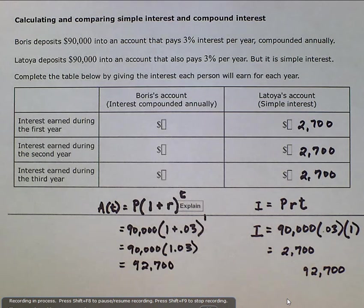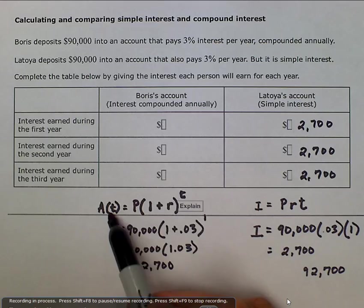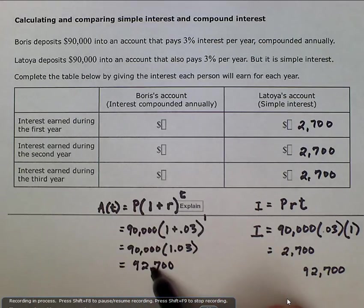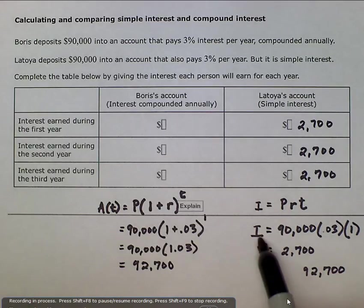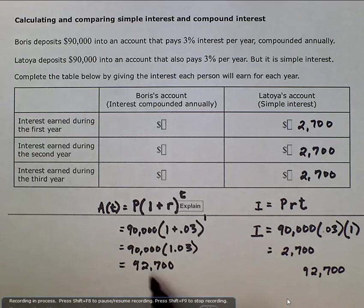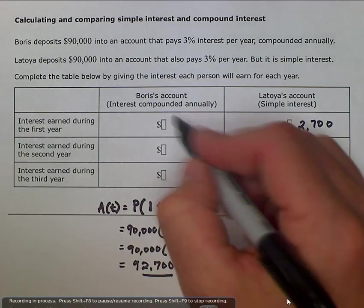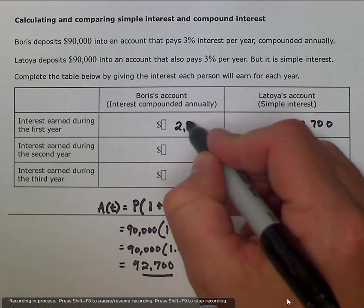Now you see the difference when working with these two formulas. This gives you the total amount in the account, or at the end of the year. Whereas this one just gives you the interest and you would have to add the interest to the starting amount. So we see that the 2,700 is the same. So after one year, 2,700 is the same.